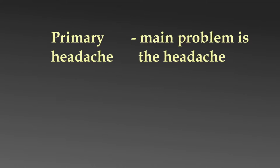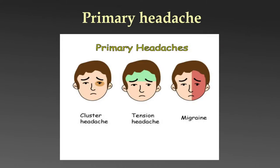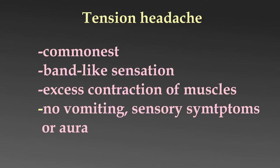Primary headaches are of three main types: tension headache, migraine, and cluster headache. Tension headache is by far the commonest. It is mild to moderate in intensity and is described as a band-like sensation around the head. It is said to be due to excess contraction of the muscles of the scalp and neck.